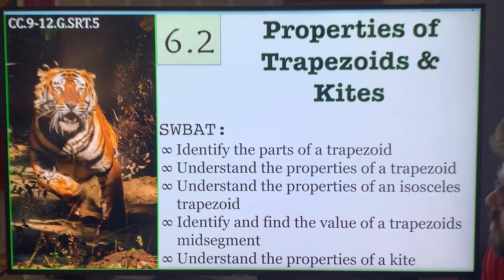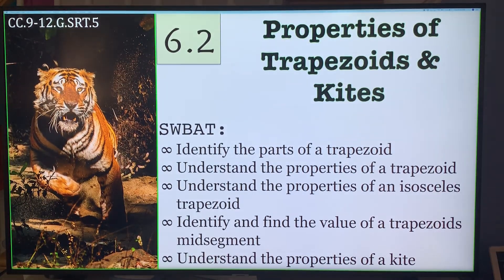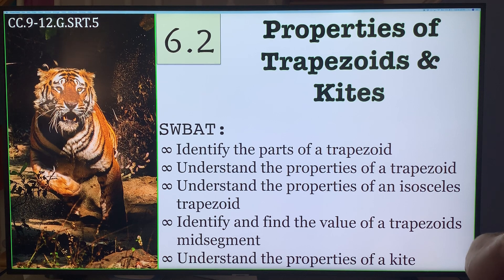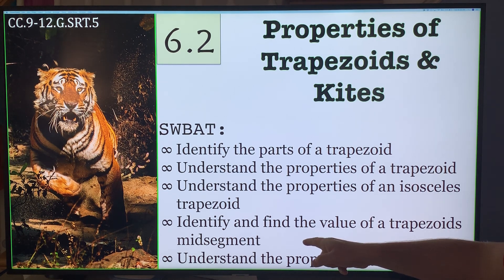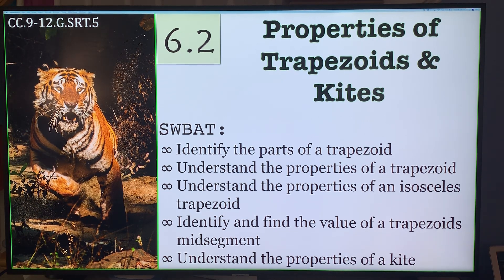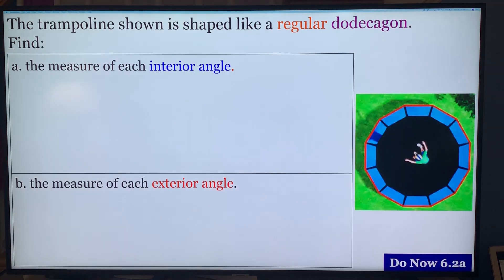Hello, welcome back. Welcome to 6.2, Properties of Trapezoids and Kites. Today we're going to go over how to identify parts of a trapezoid, understand the properties of a trapezoid, understand the properties of an isosceles trapezoid, identify and find the values of the trapezoid mid-segment, and understand the properties of a kite. By the end of today, you'll pretty much know everything about trapezoids and kites you need to know. Let's start.